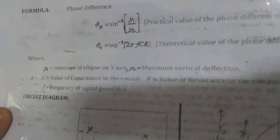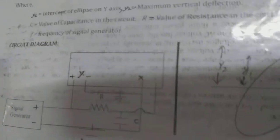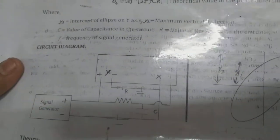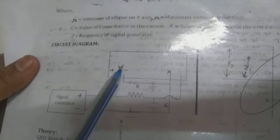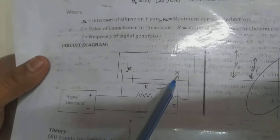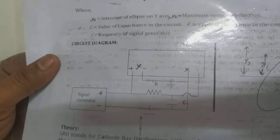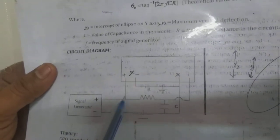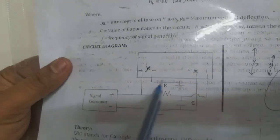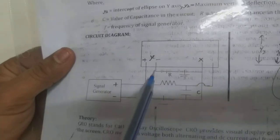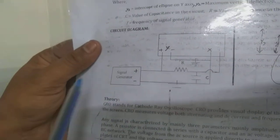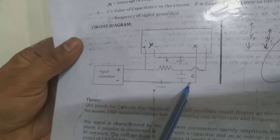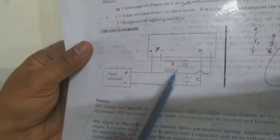For this experiment, let me explain the connections, as this is one of the applications of the CRO. You can observe the circuit diagram here, which has two terminals of the CRO — one is the X terminal and the other is the Y terminal. The Y terminal is connected to the signal generator and the X terminal is connected to the capacitance.